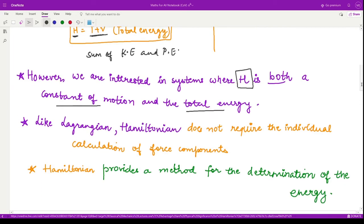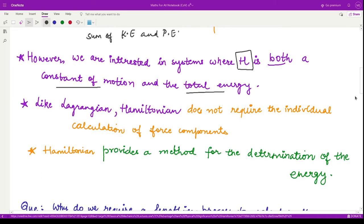Another thing is that Hamiltonian does not require the individual calculation of force components as we saw in the Lagrangian. The Hamiltonian approach goes well with the Lagrangian approach. We are building on the Hamiltonian approach using the Lagrangian approach where we have eliminated the use of all forces in vector quantities. This is also a scalar quantity.